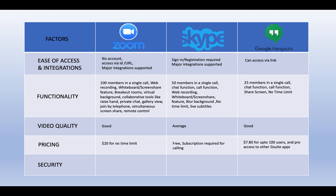The last factor is security. Zoom has been average on security — with its recent surge in popularity, there have been many issues such as Zoom bombing. For Skype, as a Microsoft-owned application, it has end-to-end encryption and is strong on security. I would rate Google Hangouts at par with Skype, as it is a Google product with enterprise-grade security. Zoom is the loser here, while Skype and Google Hangouts are at par.